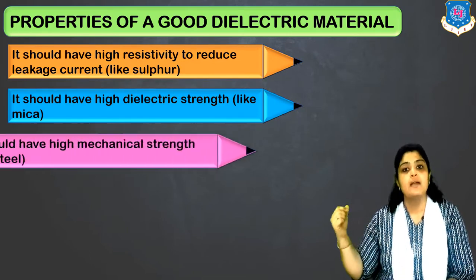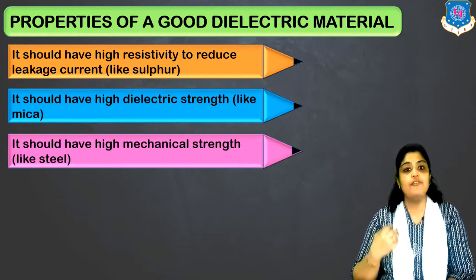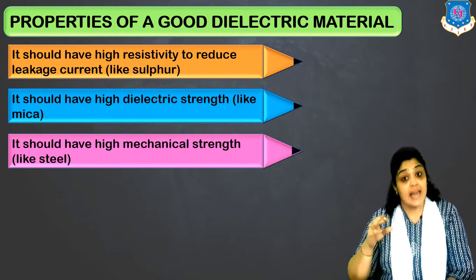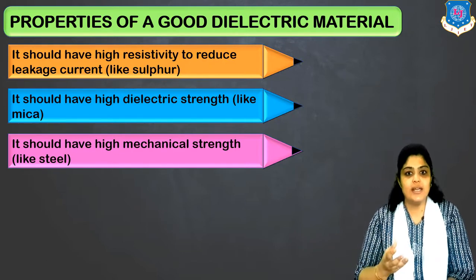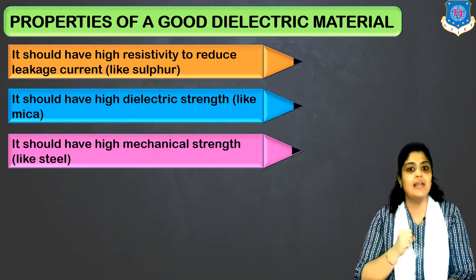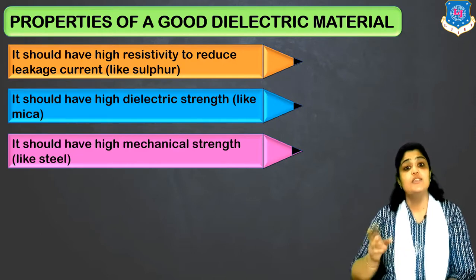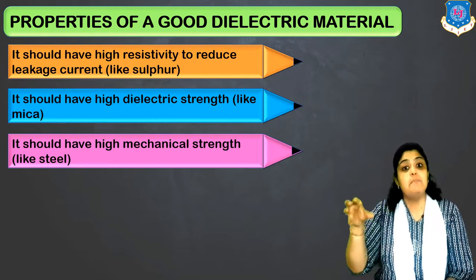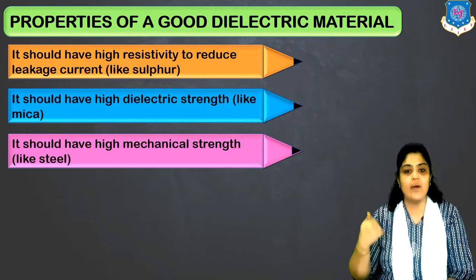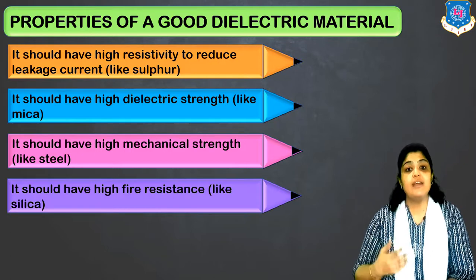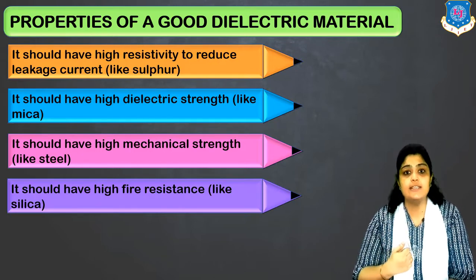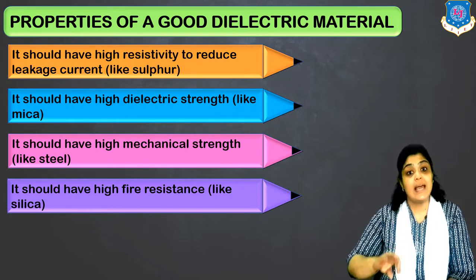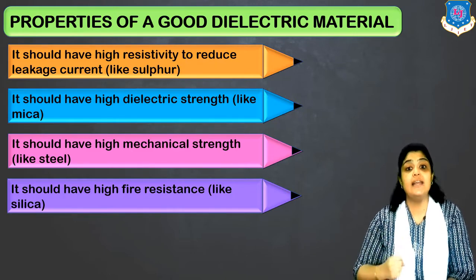Mica has high dielectric strength and very good thermal stability. Next, it should have very high mechanical strength — like steel in terms of strength. A dielectric material should have very good mechanical strength. It should also have very high fire resistance — like silica, which doesn't catch fire easily and actually opposes it. So like silica, it should be highly fire resistant.